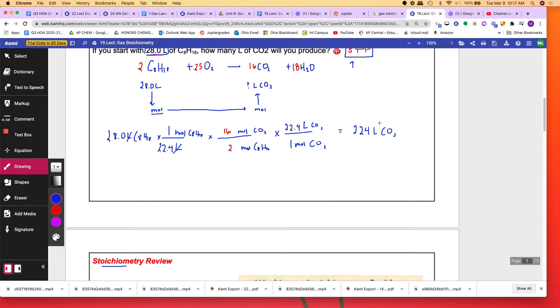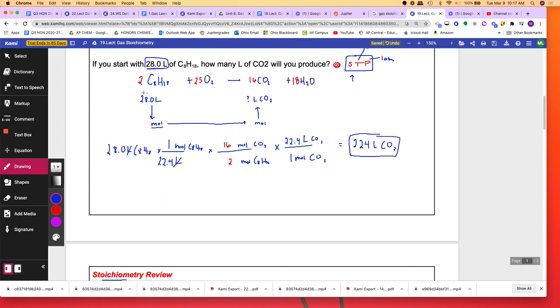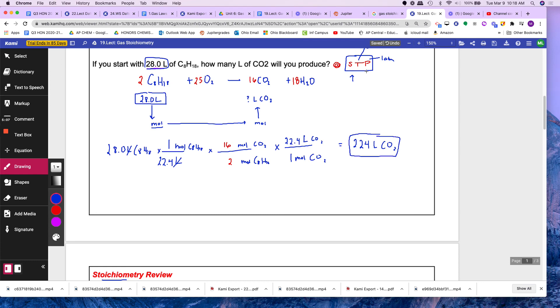So what that means is, if you start with 28 liters of C8H18, you're going to end up with 224 liters of CO2 at STP.